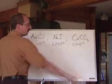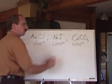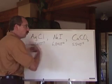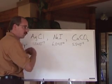If you've got AgCl, NaI, CaCO3, and the KSP values for each, and somebody says, okay, who's the most soluble and who's the least soluble? Rank them.